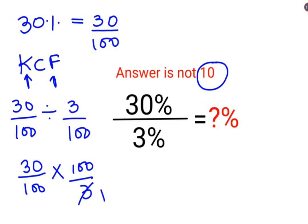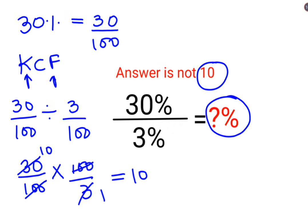This is 1, this is 10, and these get cancelled. So yes, the answer is coming out to be 10, but still I am saying that the answer is not 10. The reason for that is because they are looking for the answer in percentage form.